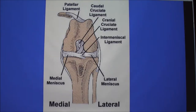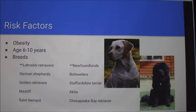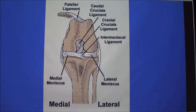There's the cranial cruciate ligament again, and the caudal cruciate ligament goes in the opposite direction. Some other important spots are the medial meniscus, which provides cushioning between the two bones, and then the patellar ligament, which is another one I'll mention in a minute. And you would also find synovial fluid in here — the ultimate lubricant.